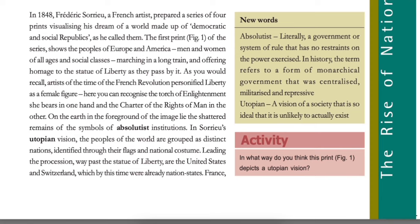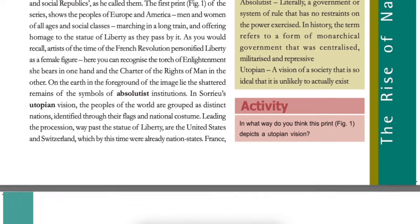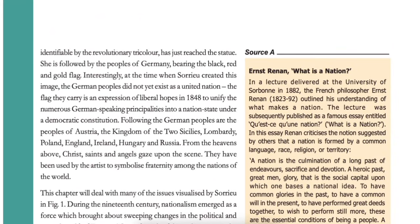In Sauriau's utopian vision, the people of the world are grouped as distinct nations identified through their flags and national costume. Leading the procession past the Statue of Liberty are the United States and Switzerland, which by this time were already nation-states. France, identifiable by the revolutionary tricolour, has just reached the Statue. She is followed by the peoples of Germany bearing the black, red and gold flag.